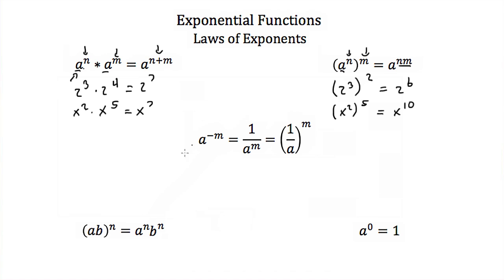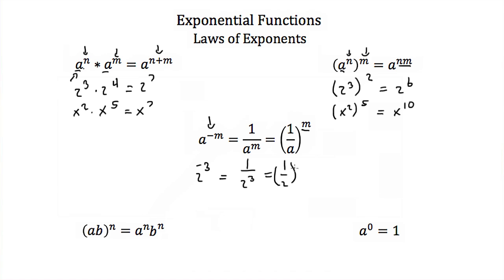Now if you ever see a negative exponent — here we have a to the negative m — that's equal to 1 over that number with a positive exponent. Or you can think of it as 1 over a in a fraction to the positive m exponent. So 2 to the negative 3 equals 1 over 2 cubed, or 1 half cubed — however you want to write it.